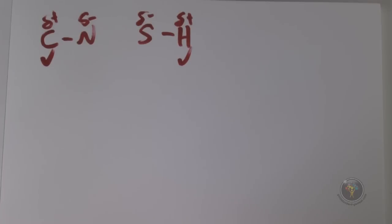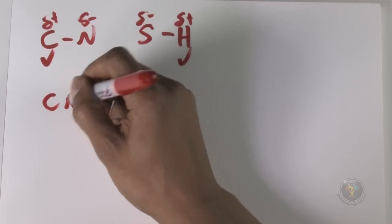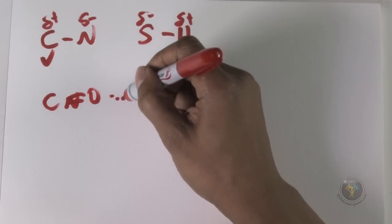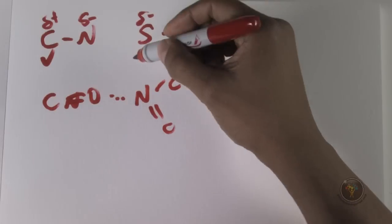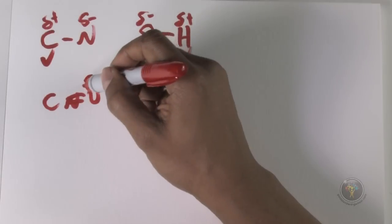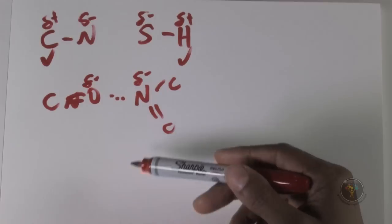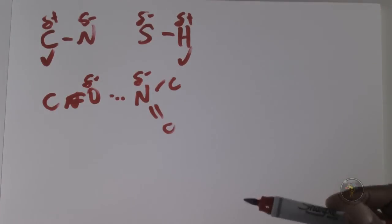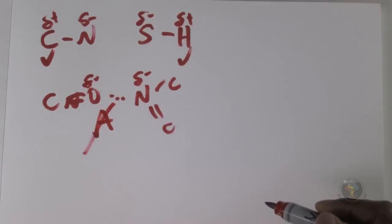Moving on to Question 8: of the following, which is the attractive interaction? For answer A, you have carbon bonded to oxygen and then nitrogen bonded to carbons. That nitrogen is definitely delta negative — it's to the right of carbon in the periodic table — and the oxygen is delta negative as well. So they would repel; there would not be a strong interaction. Answer A is definitely out.